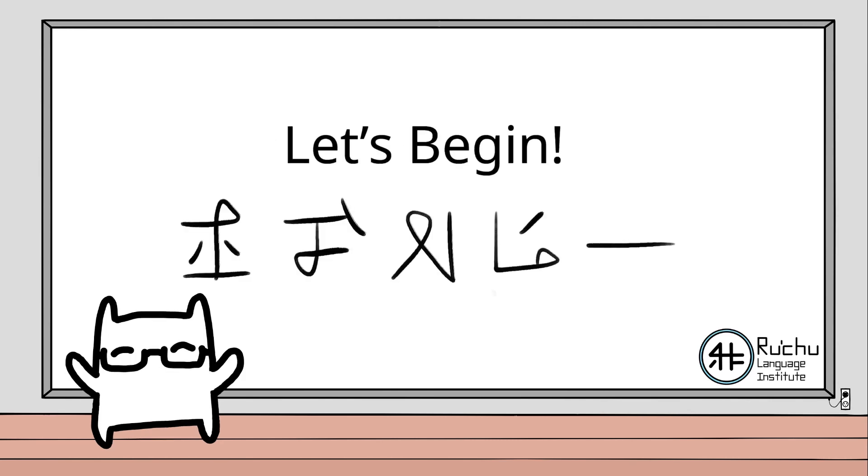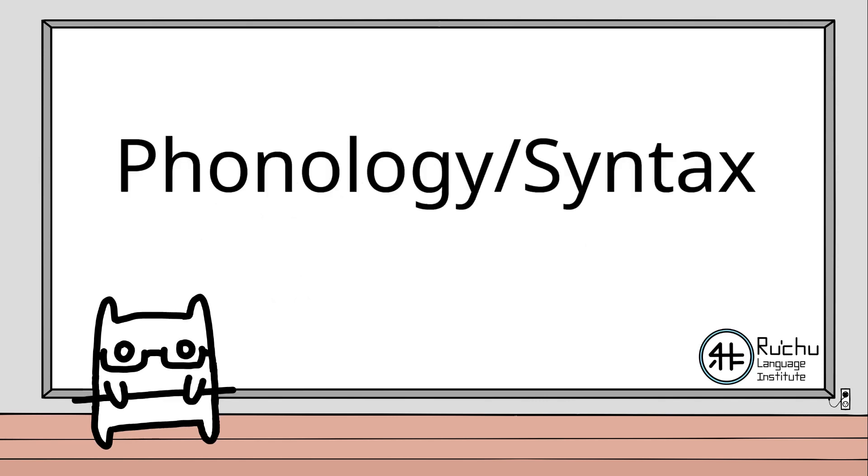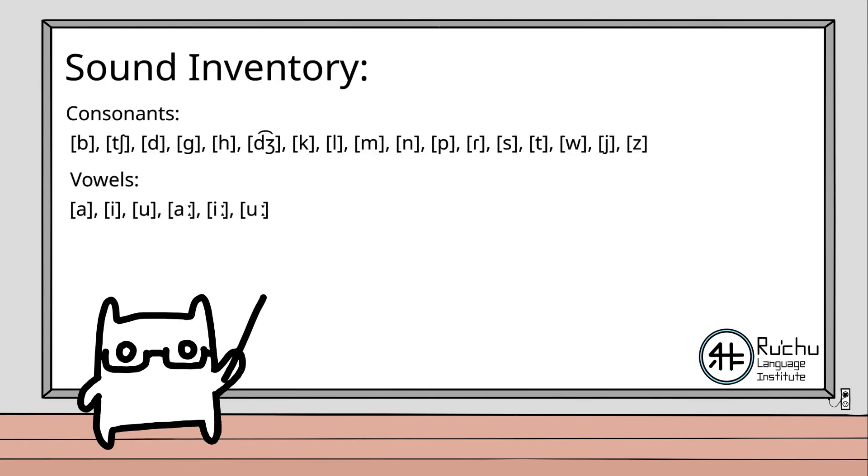That being said, let's begin. The phonological inventory of Ruchu has changed since the last conlang video on this channel. As of this current video, there are 17 consonants and 6 vowels, half of which are long vowels. The full inventory is displayed here.